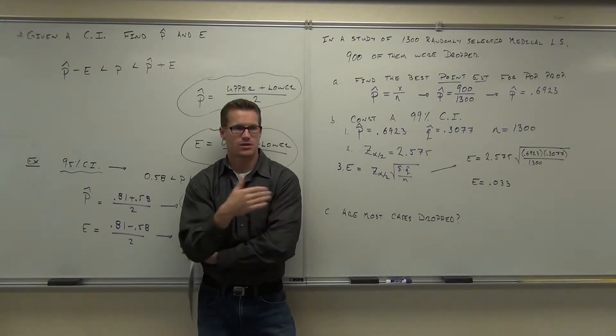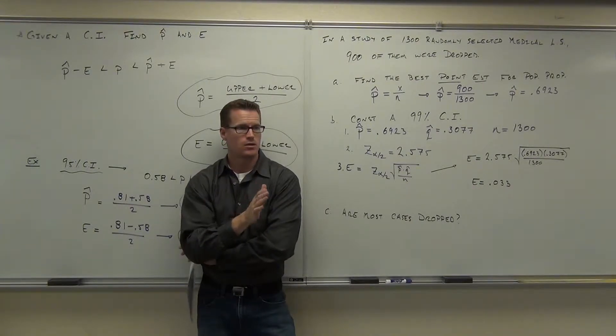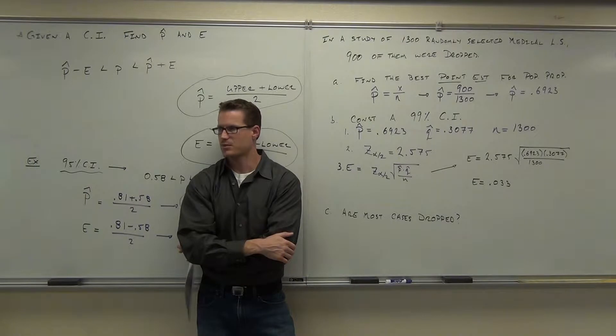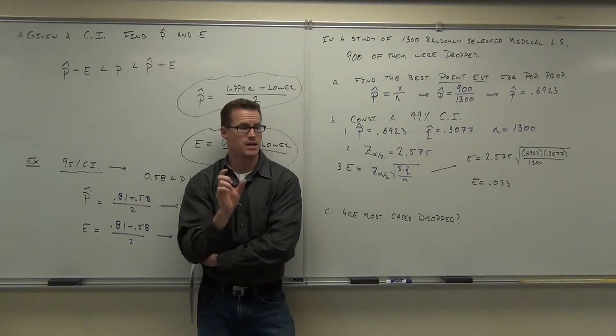99% should be kind of actually far away. What makes it so that even though we're 99%, we're pretty close? How big is your sample size? It's huge. It's a huge sample size. 1,300 sample size there. That's making that margin of error pretty small.